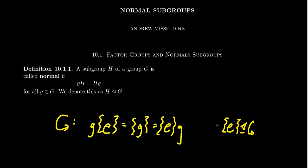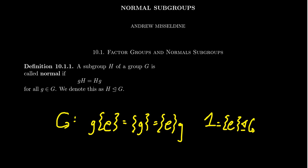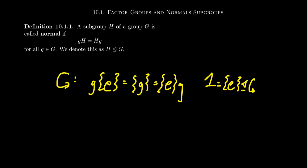The trivial subgroup is often denoted as either e itself, or more often in this lecture series you'll see a 1 — a 1 will indicate the trivial subgroup. There's really not a huge reason to distinguish a singleton set from the element itself.